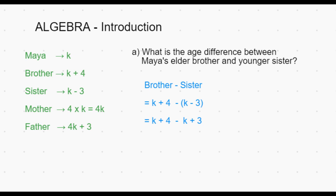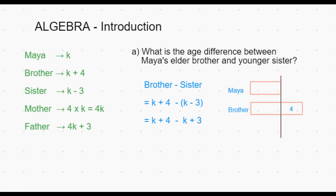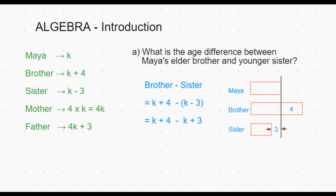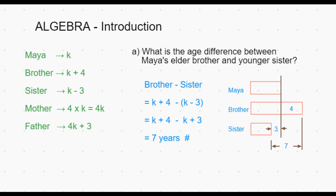Minus K minus 3 when we subtract becomes minus K plus 3. Compared to Maya's age, her brother is 4 years elder and her sister is 3 years younger. So the difference between the brother and sister is 4 plus 3, which is 7 years. In the algebraic expression, K plus 4 minus of K minus 3, when we open up the bracket it becomes minus K minus of minus 3 is plus 3. So the difference: K minus K becomes 0 and 4 plus 3 is 7 years.